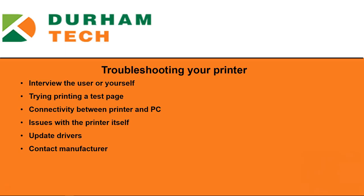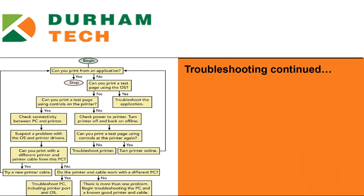Now that you know about the two popular printers and their components, what if an error occurs? The best place to start troubleshooting is by asking the user what happened — they should be able to determine what works and what doesn't. A simple question might be: can you print from the application? If yes, there's probably no major issue. If no, problems can be isolated in one of the following areas: the printer itself, connectivity between the PC and its local printer, connectivity between the PC and a network printer, the OS or printer drivers, or the application attempting to use the printer.